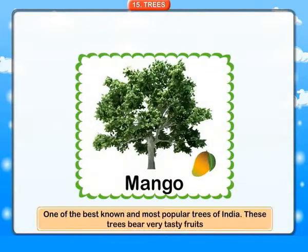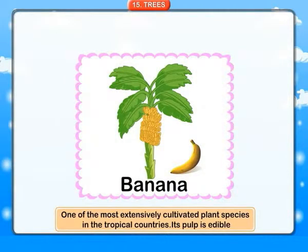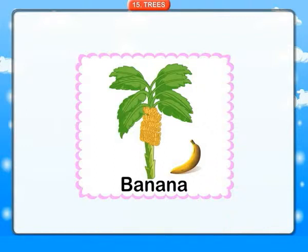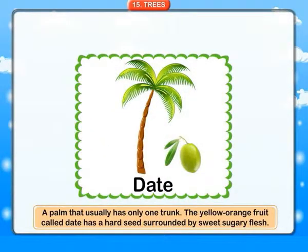Mango: one of the best-known and most popular trees of India. These trees bear very tasty fruits. Banana: one of the most extensively cultivated plant species in tropical countries. Its pulp is edible. Date: a palm that usually has only one trunk.